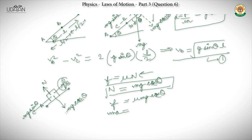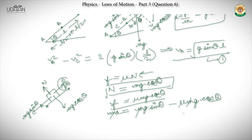We have seen that F equals μ·mg·cos θ, so we substitute: ma = mg·sin θ − μ·mg·cos θ. Cancelling m from every term, we have acceleration equal to g·sin θ − μ·g·cos θ.